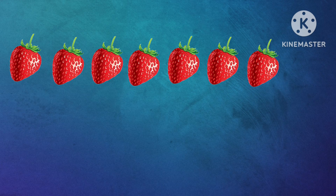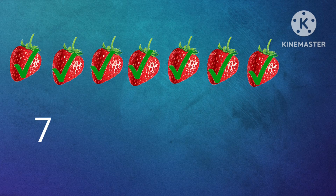Here how many strawberries we have? Shall we count? 1, 2, 3, 4, 5, 6, 7. There are 7 strawberries.